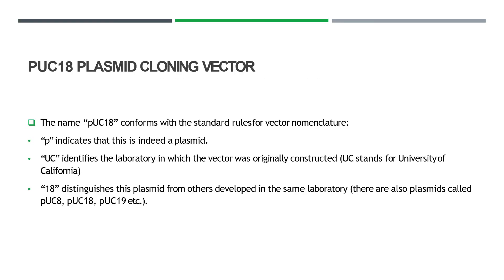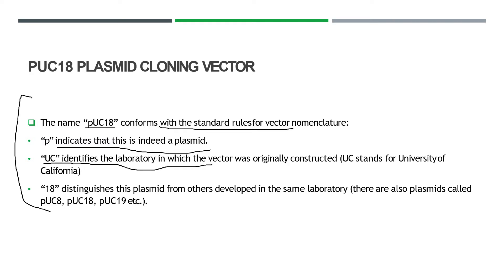Welcome back to another video on cloning vectors for E. coli. In this video we'll be talking about pUC18 plasmid cloning vector. The name pUC18 conforms with the standard rules for vector nomenclature: 'p' indicates it's a plasmid, 'UC' identifies the laboratory — it stands for University of California — and '18' is the distinguishing number which differentiates it from other cloning vectors.